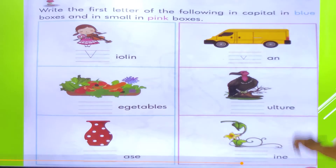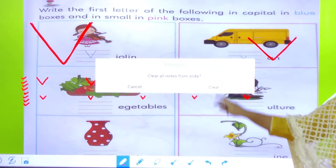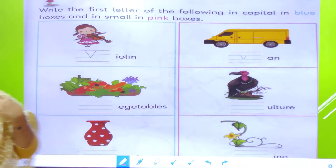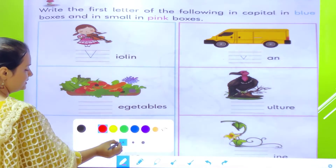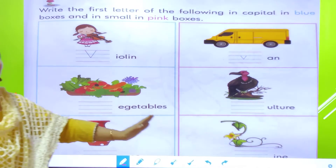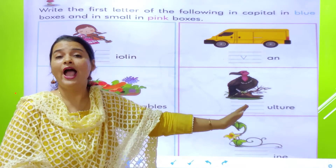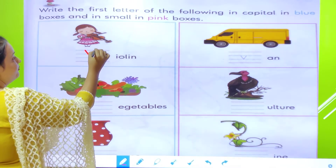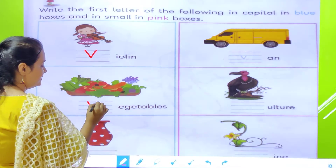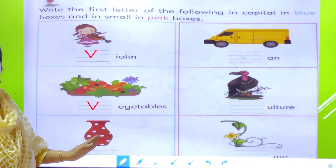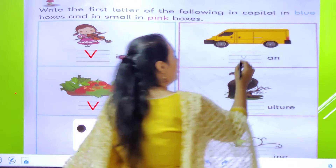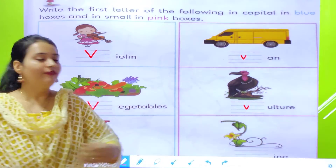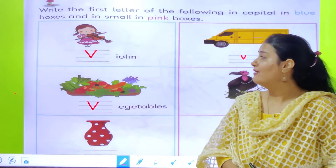Now next one. What we have to do here — write the first letter of the following in capital in the blue boxes and in small in the pink boxes. So we have to write capital letter V in the blue boxes, and small letter V in the pink boxes. V for violin, V for vegetables, V for balls, V for van, V for vulture, and V for wing.